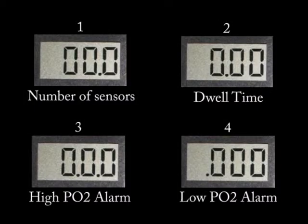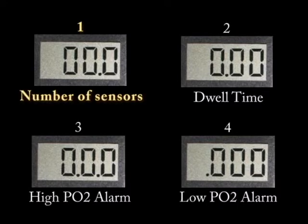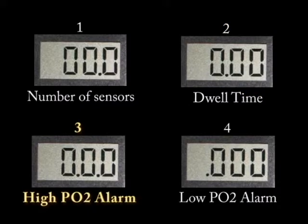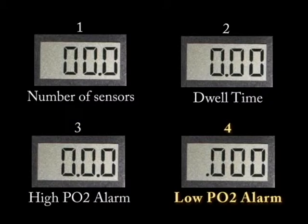Here we see the four steps in the menu system and their associated decimal point position. Step one is changing the number of sensors attached to the display board. Step two is the amount of dwell time between displaying subsequent sensor readings. Step three is the high PO2 alarm set point, and step four is the low PO2 alarm set point. In the future there may be more options, so please refer to your owner's manual.